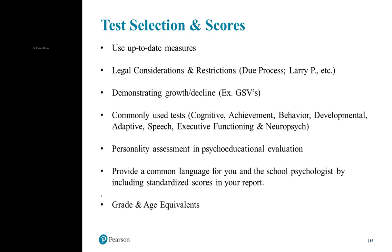Modern tests now have what we call growth scores, represented as GSVs. This was a requirement from the federal government that when you do achievement testing in particular, you can generate a score allowing you to track change over time relative to the aggregate normative reference population. Commonly used tests in psychoeducational evaluations include cognitive tests like the Wechslers from Pearson; achievement tests like the WIAT and KTEA; major behavior tests like the BASC, Achenbach, or Conners; developmental tests like the Bayley or Mullen; and adaptive tests like the Vineland or ABAS. There are also a range of speech tests for receptive language, expressive language, articulation, and so on.